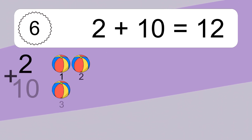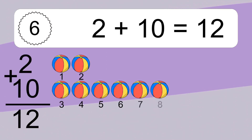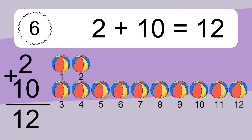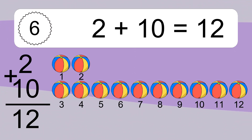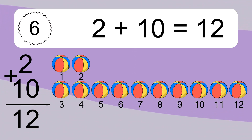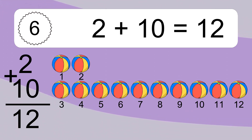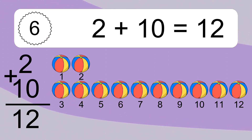2 plus 10 equals what? 2 plus 10 equals 12. Let's count it. 1, 2, 3, 4, 5, 6, 7, 8, 9, 10, 11, 12.